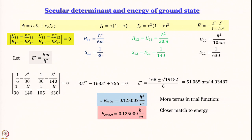We said the wave function has all the information about a system — you make the Hamiltonian operate on it and it gives you the answer. Here we are going beyond that: we do not even know the wave function. We are making up some kind of wave function and changing it until we get close to the right answer. In these test cases exact solutions are known, which gives us confidence that yes, it works.